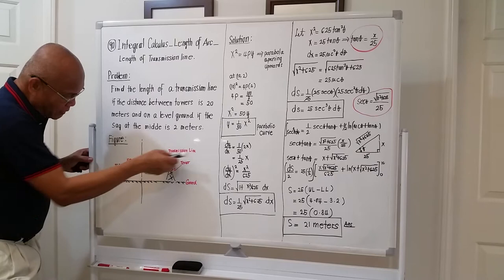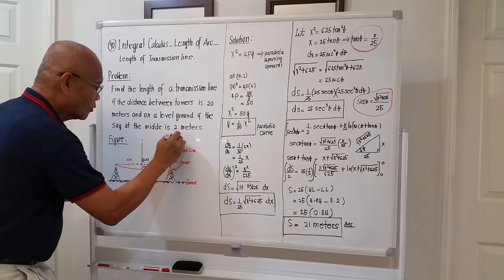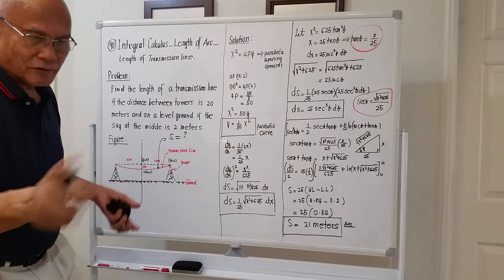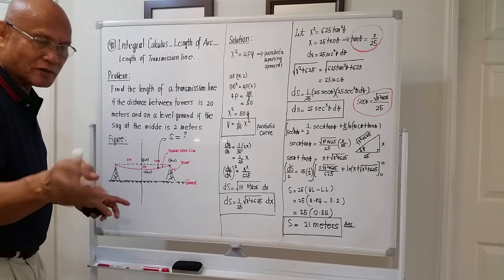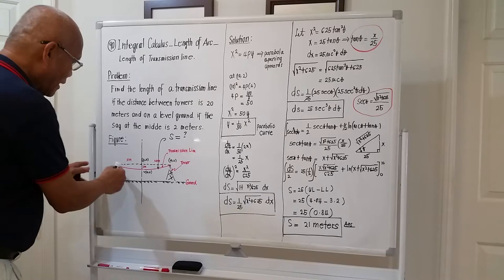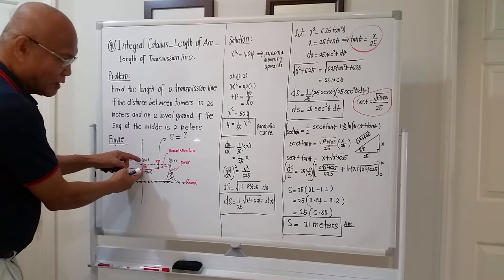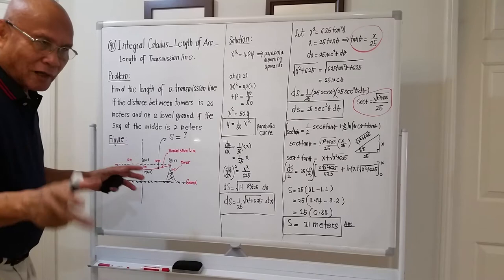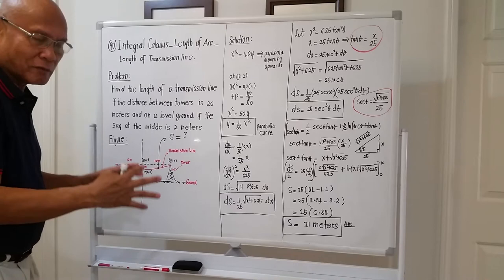The sag at the middle — if we draw a horizontal line here — will be 2 meters. The problem asks for the total length of the transmission line. It's supposed to span 20 meters, but whether you like it or not, there will be a sag at the middle. So if there is a sag, the total length of the transmission line will be a little bit longer than 20 meters. We expect the answer to be more than 20 meters.